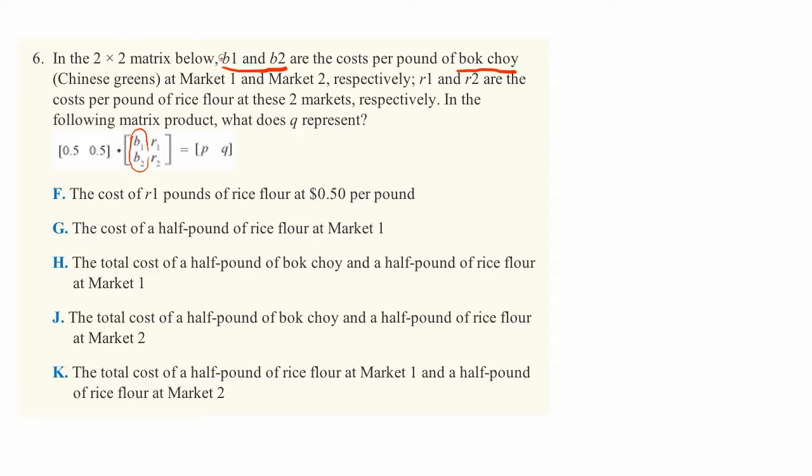So specifically, B1 is market 1 and B2 is market 2. R1 and R2 are the cost per pound of rice flour at the same market. So R1 and R2, same relationship applies here, one of them is market 1, one is market 2.